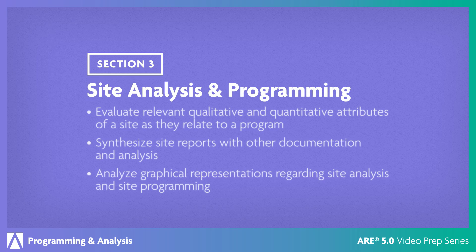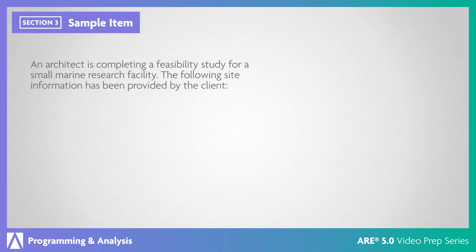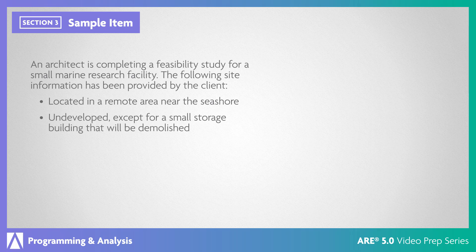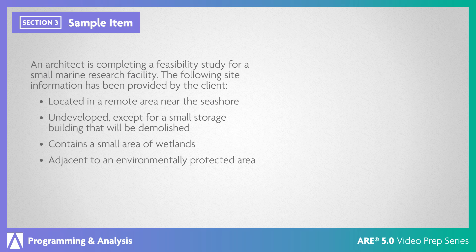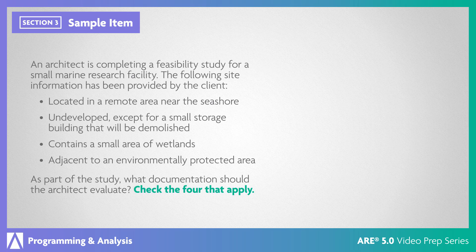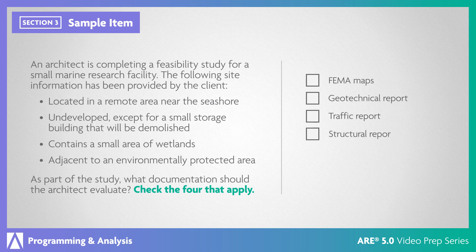In the site analysis and programming section, you'll need to analyze a project site relative to the program and project requirements. An architect is completing a feasibility study for a small marine research facility. The following site information has been provided by the client: located in a remote area near the seashore, undeveloped except for a small storage building that will be demolished, and contains a small area of wetlands adjacent to an environmentally protected area. As part of the study, what documentation should the architect evaluate? Check the four that apply: FEMA maps, geotechnical report, traffic report, structural report, topographic survey, hydraulic conditions report.